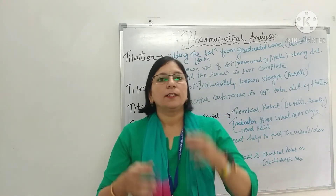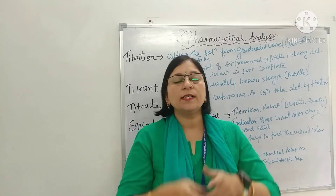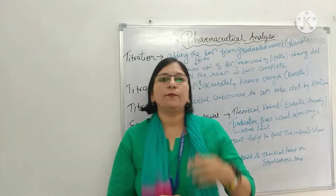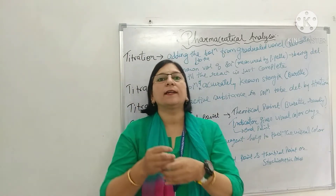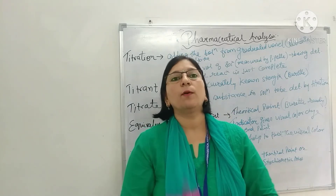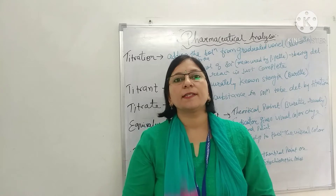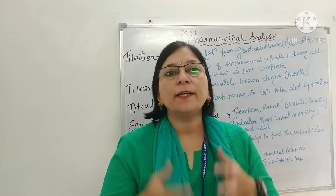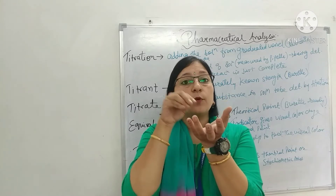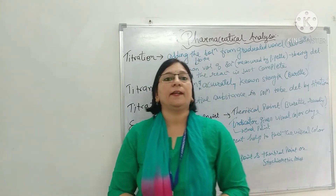Titrant: the solution of accurately known strength used in titration is called a titrant; this is usually added from a burette. जो burette से हम add कर रहे हैं, जिसकी strength हमको पता है, उस solution को हम titrant कहते हैं। Titrate: the active substance in solution to be determined by titration — conical flask में जो solution है, जो active substance है जो हमको determine करना है, उसको हम titrate कहते हैं।